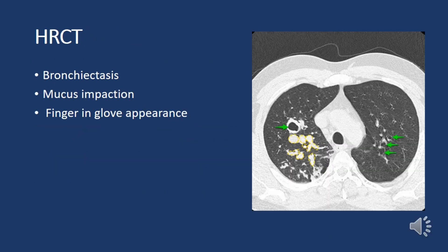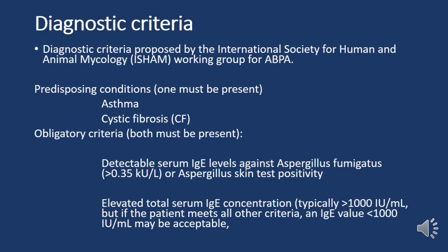HRCT features of ABPA include bronchiectasis and mucus impaction. Mucus impaction — the accumulation of mucus within the bronchi leading to airway obstruction and subsequent bronchiectasis — is a characteristic finding. The finger-and-glove appearance is another hallmark, describing dilated bronchi filled with mucus that resemble the shape of a finger within a glove.